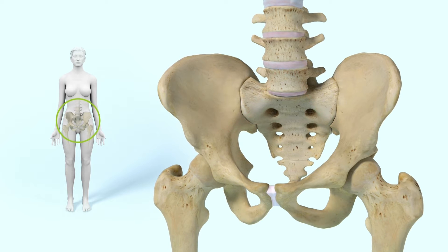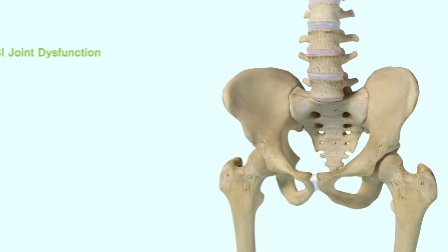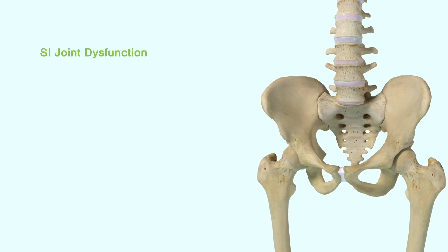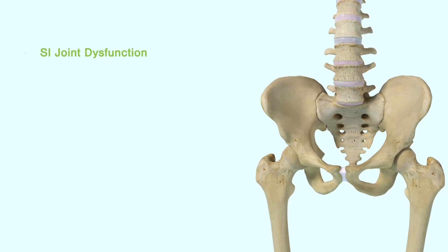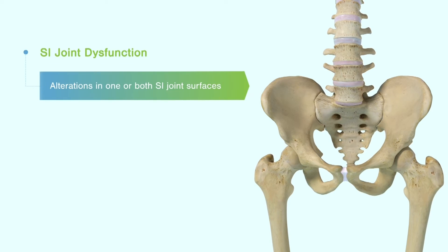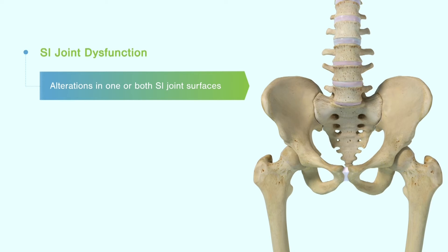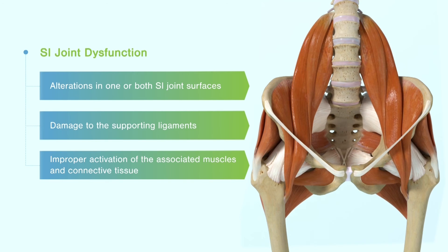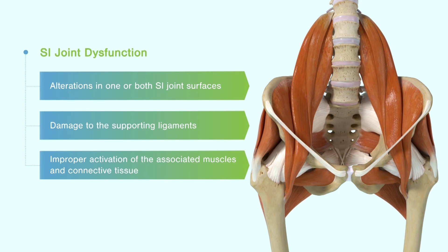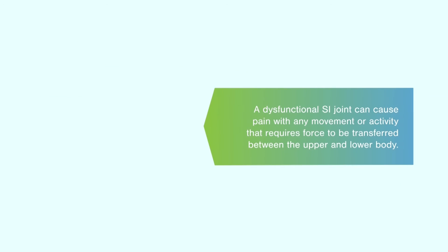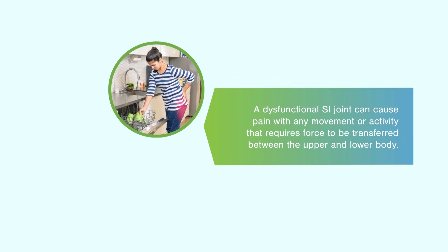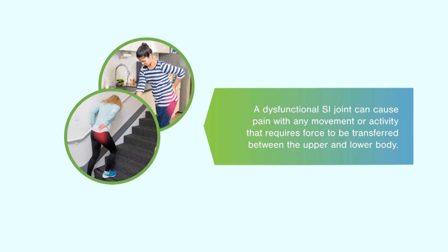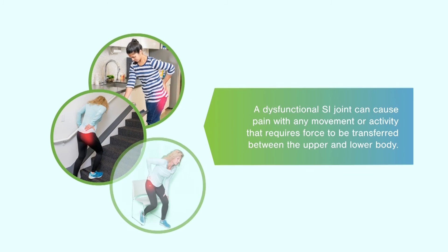SI joint dysfunction occurs when the musculoskeletal biomechanics of the pelvis are impaired because of alterations in one or both SI joint surfaces, damage to the supporting ligaments, or improper activation of the associated muscles and connective tissue. A dysfunctional SI joint can cause pain with any movement or activity that requires force to be transferred between the upper and lower body.